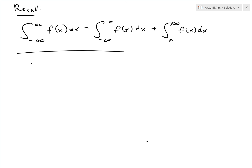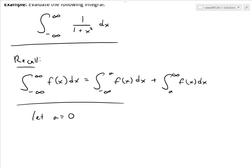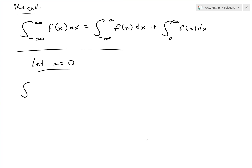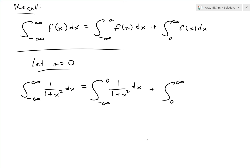Let's pick a equals zero for symmetry and convenience. So in our case, the integral from negative infinity to infinity of 1 over 1 plus x squared dx equals the integral from negative infinity to zero of 1 over 1 plus x squared dx, plus the integral from zero to infinity of 1 over 1 plus x squared dx.